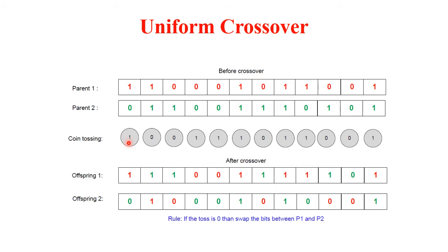For the first bit, the coin toss outcome is 1, so we don't swap bits; offspring 1 gets 1 from parent 1. When the coin toss outcome is 0, we swap bits between parents. For offspring 2, the same process applies: a toss of 1 means no swap (take from parent 2), while a toss of 0 means swap (take from parent 1).